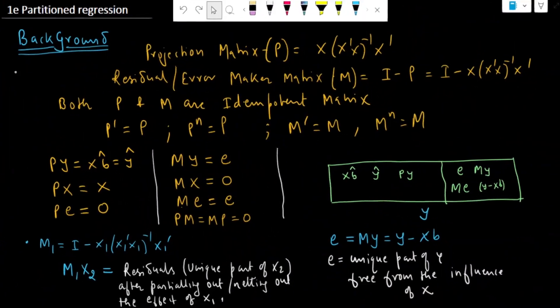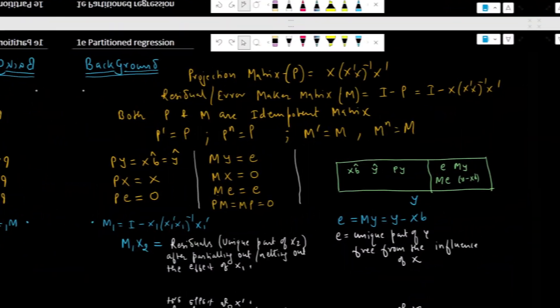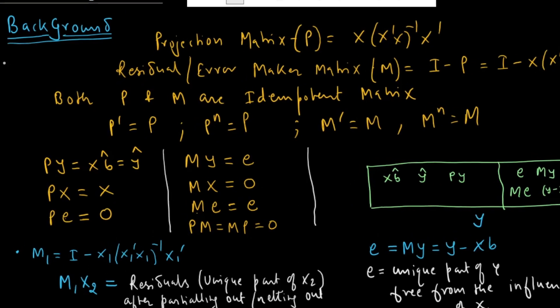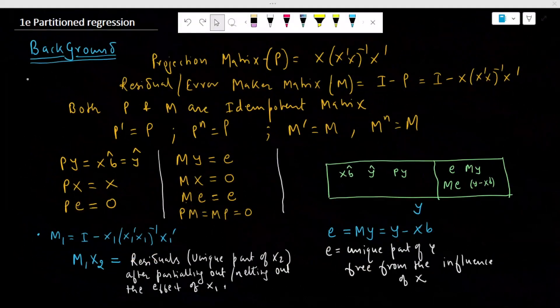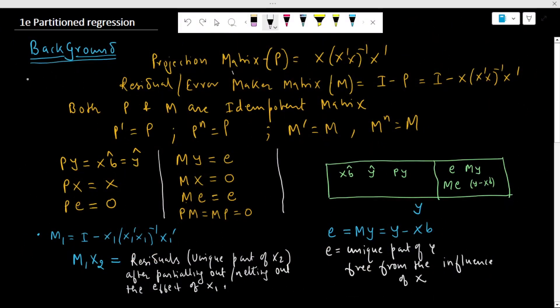Welcome to Econometrics Melody. In this video we will derive the beta estimate for partition regression. Up to this point we have learned about the projection matrix as well as the residual or annihilator matrix, and we know that both the projection matrix and the annihilator matrix are idempotent matrices exhibiting these features.